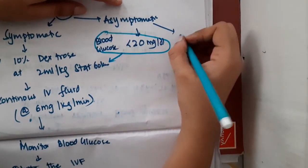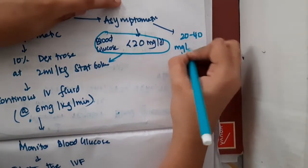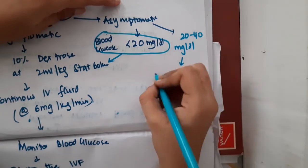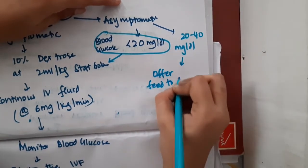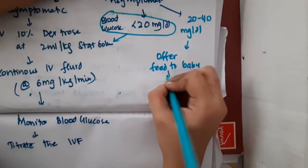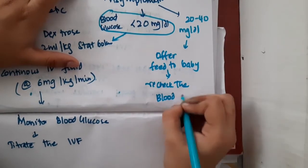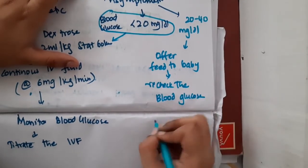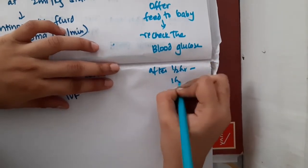Or, if the baby's blood glucose level is 20 to 40 milligrams per deciliter, then you should offer the feed to the baby. And after feeding, you should recheck the blood glucose level. This blood glucose level should be rechecked after half an hour to one hour.